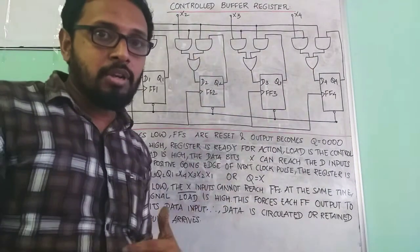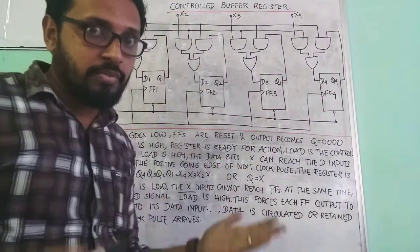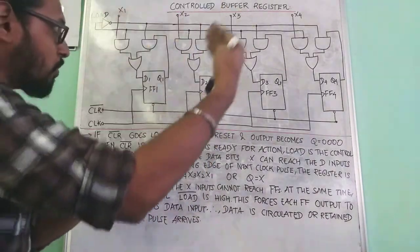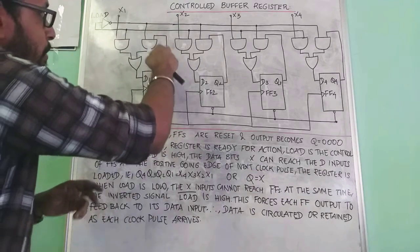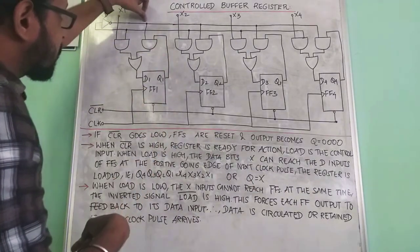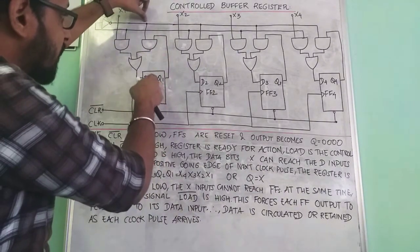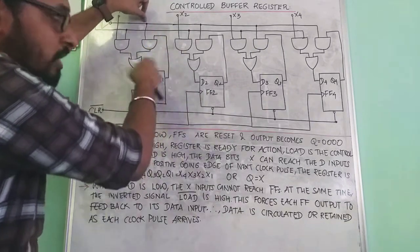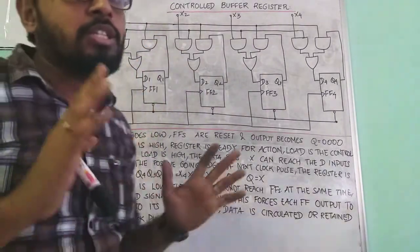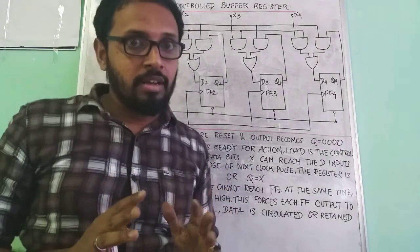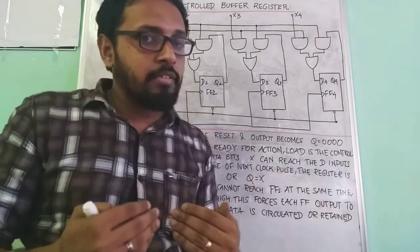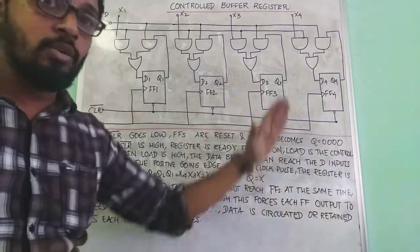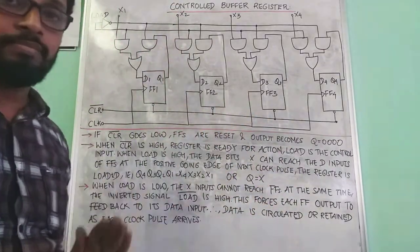No extra data can be loaded — no X will be loaded — but the data which was already present will be retained because load bar is high, no extra loading takes place. The data which was already stored will be retained and via the OR gate will be stored back in the flip-flop. It can be a bit confusing — please listen to the video again and again so that it will be clear. The notes are also given, please go through.